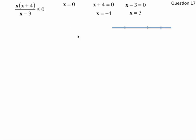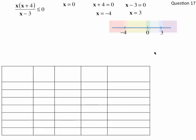We put these three points on the number line, and that makes seven different regions: the region less than negative 4, the point where x equals negative 4, the region between negative 4 and 0, the point where x is 0, the region between 0 and 3, the point where x is 3, and the region greater than 3. We're going to put that into a chart.